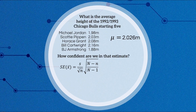And in the very first example with an infinite population, if you substitute infinity for both capital Ns in the finite population correction formula, the fraction becomes infinity over infinity, which resolves to 1 — square root of which is also 1 — and the multiplier disappears, leaving you with S on root n. So the finite population formula actually applies in all three scenarios.